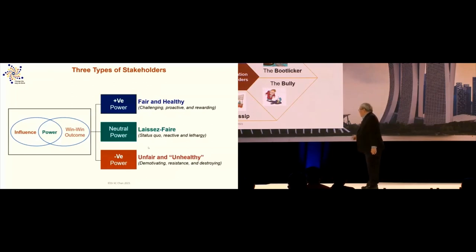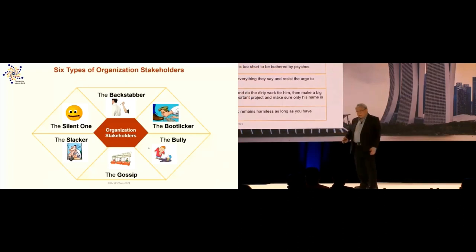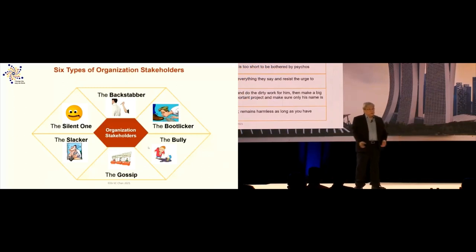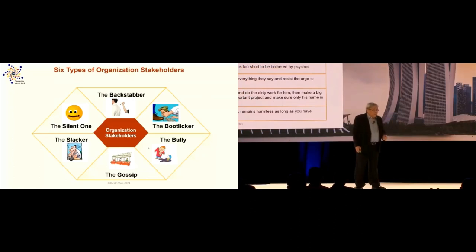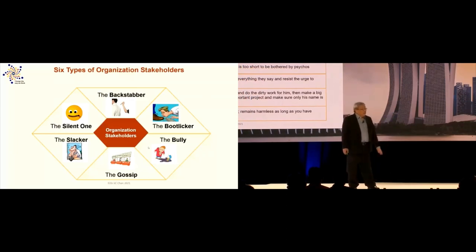There are five — some books say eight or nine — but let us just look at whether it fits our environment. We know there are people who backstab us — this is normal; otherwise it's not called human beings. Then there is the boot-licker: in front of the CO they say 'I am 100% agree with you,' but behind the scenes they disagree. The gossiper uses the CO's name as authority — 'I just finished my meeting with the CO, the CO says...' — and you dare not call the CO to verify.